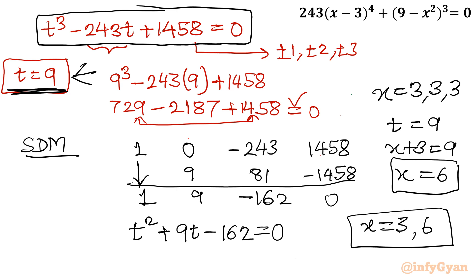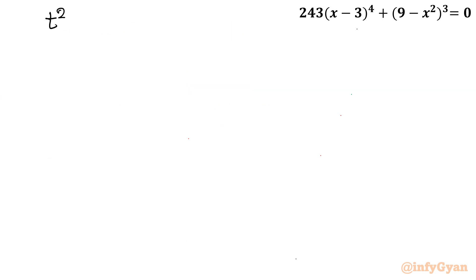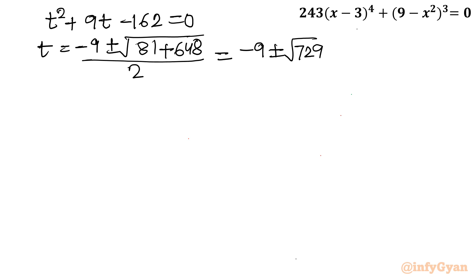Let us solve this quadratic equation. t² plus 9t minus 162 equal to 0. t equal to minus 9 plus minus square root of b squared 81, 4 times this one I will get plus 648 divided by 2. I can write minus 9 plus minus square root 729 over 2. Now I know that square root 729 is 27 squared actually. So I can write plus minus 27 over 2.